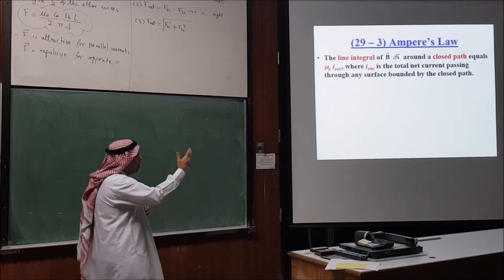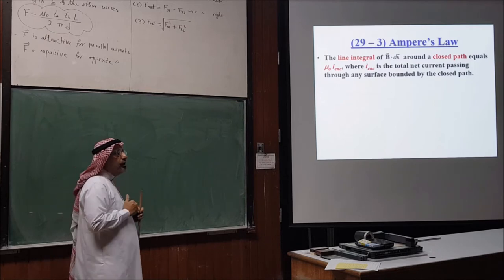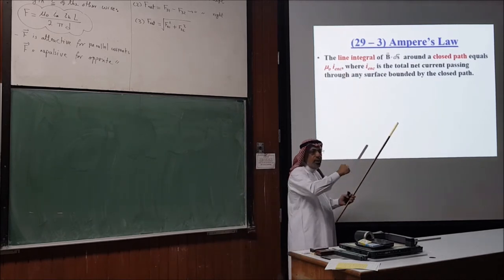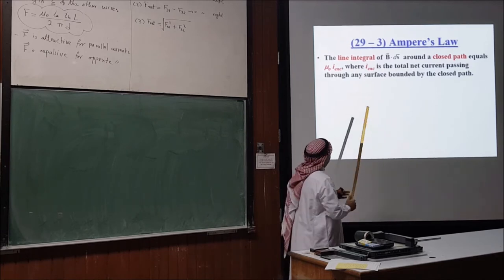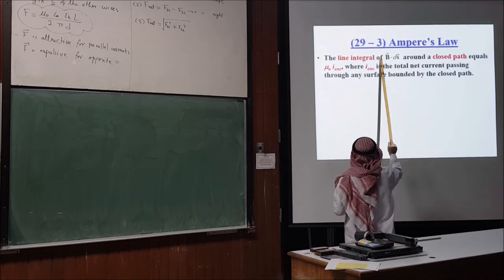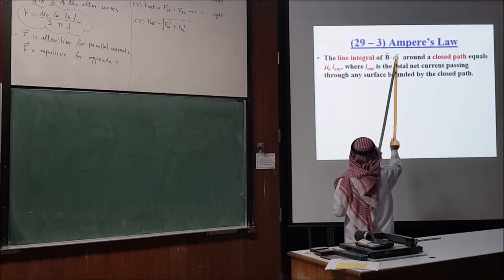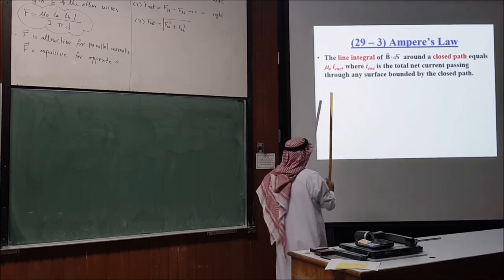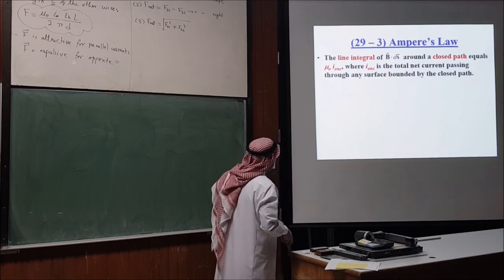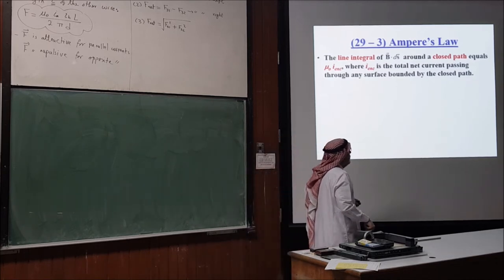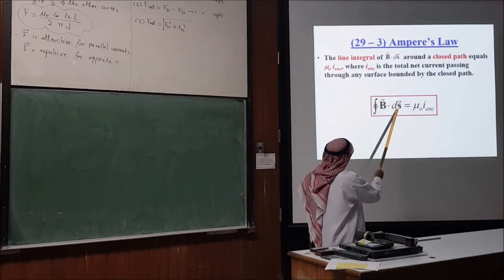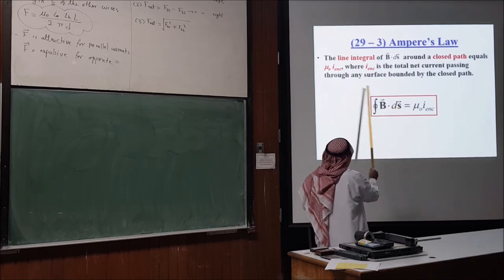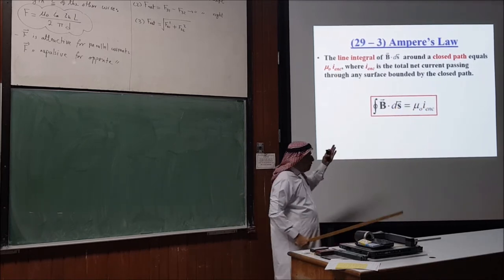Ampere's law states: the line integral of B·dS around a closed path equals μ₀ times the current enclosed inside that path. Mathematically: ∮B·dS = μ₀I_enclosed. Notice the extreme similarity to Gauss's law — there we integrate over a closed surface and talk about enclosed charge; here we integrate over a closed loop and talk about enclosed current, with μ₀ replacing 1/ε₀.